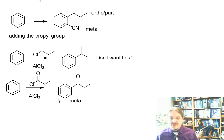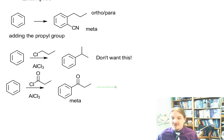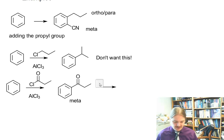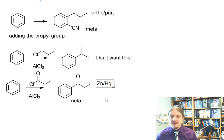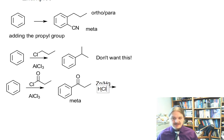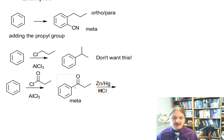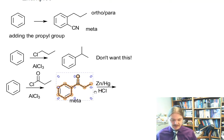The ketone is a meta director, so this is important to note. And we can reduce the ketone to the hydrocarbon using zinc-mercury amalgam and hydrochloric acid. This is the Clemmensen reduction, and this would give us propylbenzene.